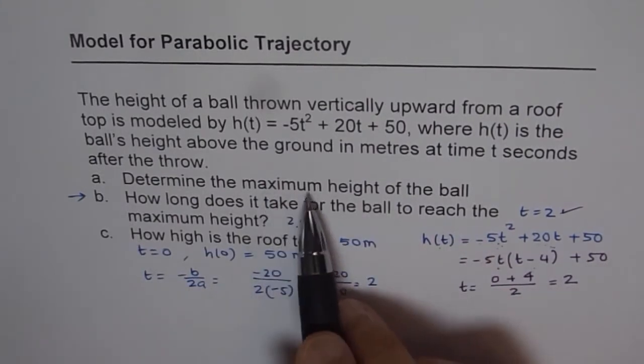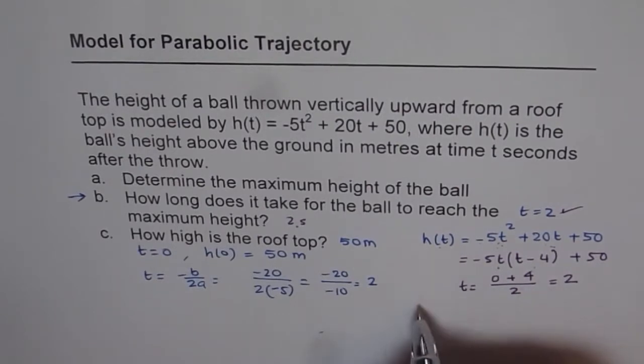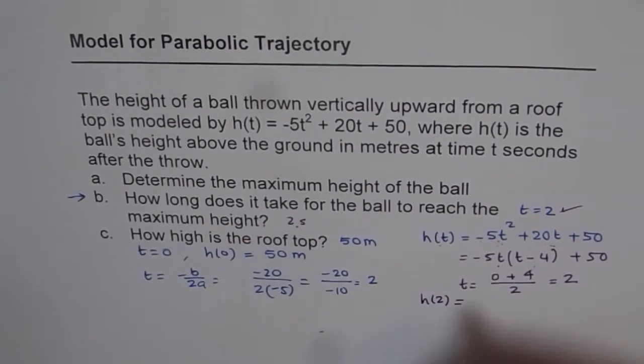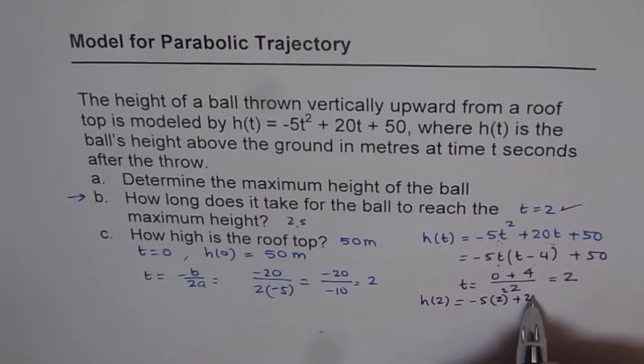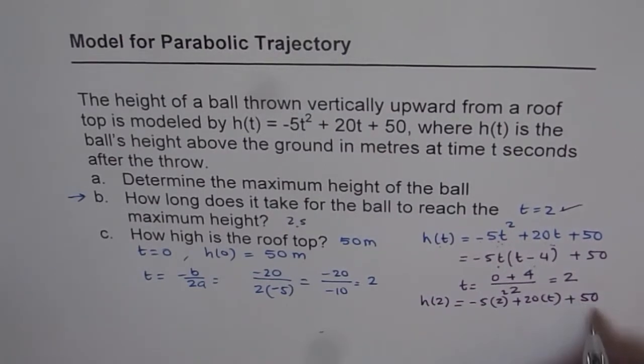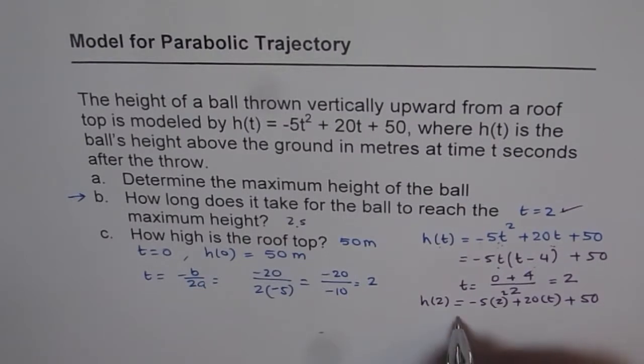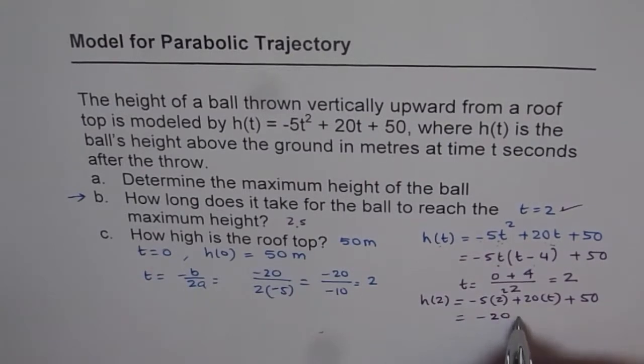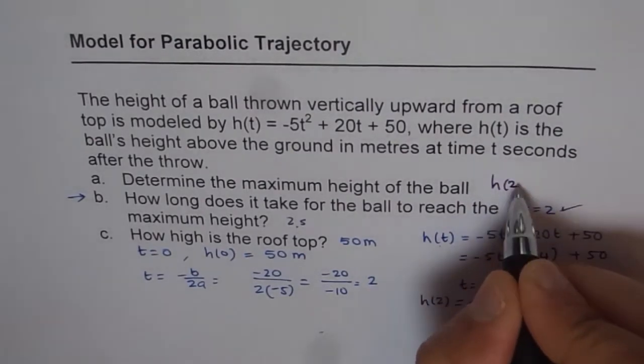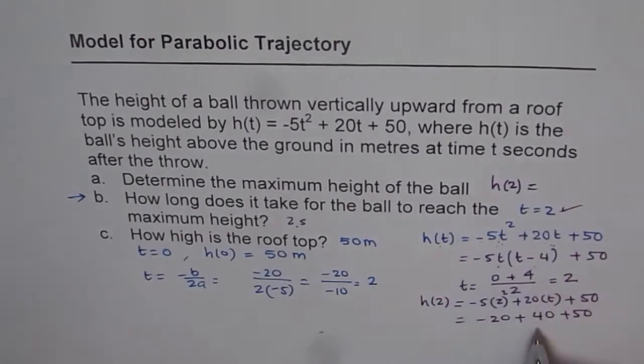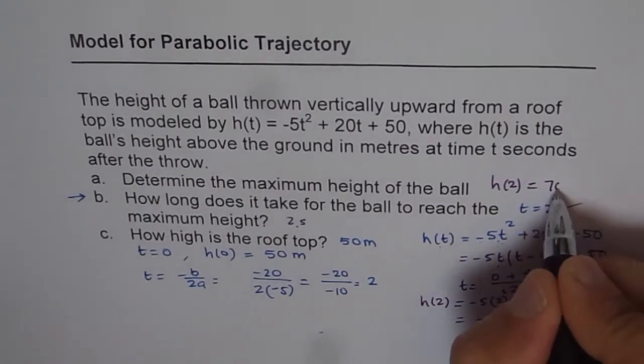Now determine the maximum height. That means height at t equals 2. So just calculate what is h(2) equals. When you plug in 2, you get minus 5 times 2 squared plus 20 times t plus 50. You can use your calculator or we have minus 2, 2 squared is 4, 4 times 5 is 20, minus 20 plus 2 times 20 is 40 plus 50. When you add them, you get 20 plus 50, 70 is your answer. So we can get maximum height is when time is 2 seconds, and we get that equals to 70 meters.